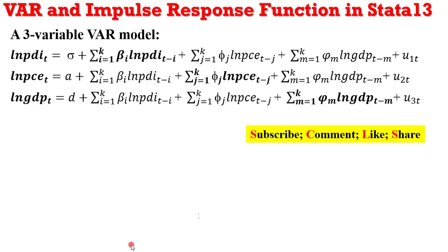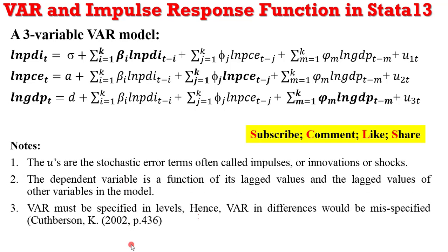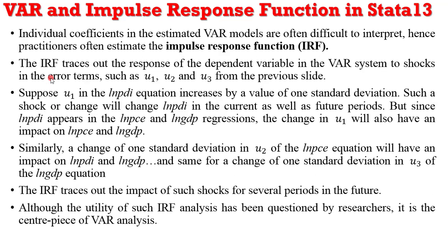Now on the screen is a three-variable VAR model, which I'm going to use to explain the dynamics of an impulse response function. By now we know that all the U's are the errors — they are also called innovations in the language of shocks. So it is these innovations that we are going to analyze and see their dynamism within the VAR model. Given that individual coefficients in the estimated VAR model are often difficult to interpret, practitioners often estimate what we know as the impulse response function.